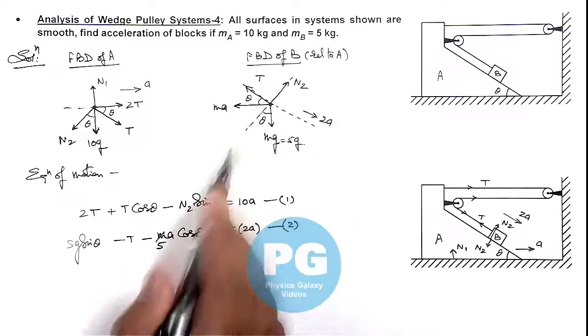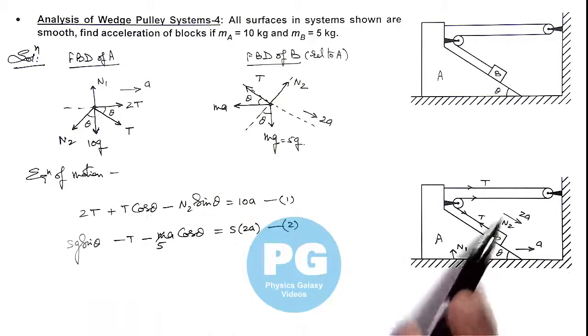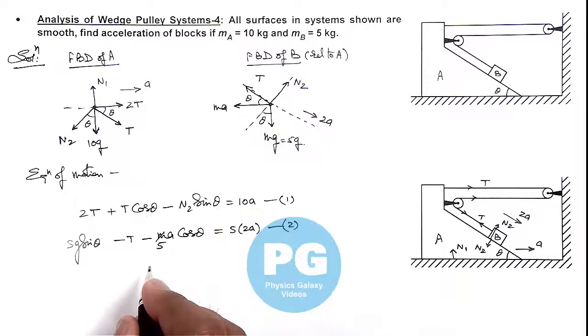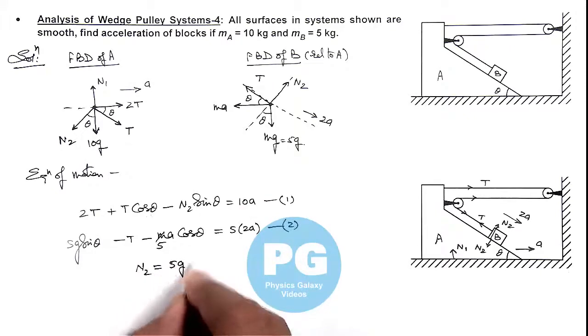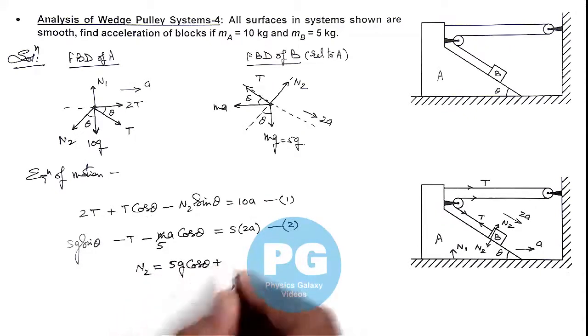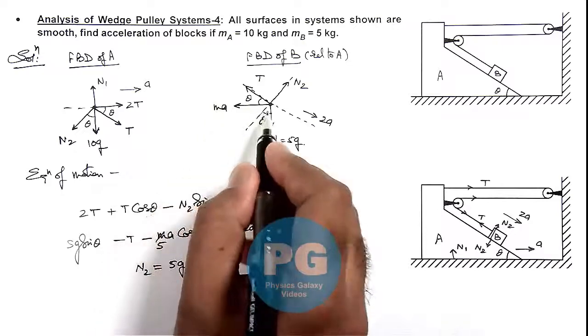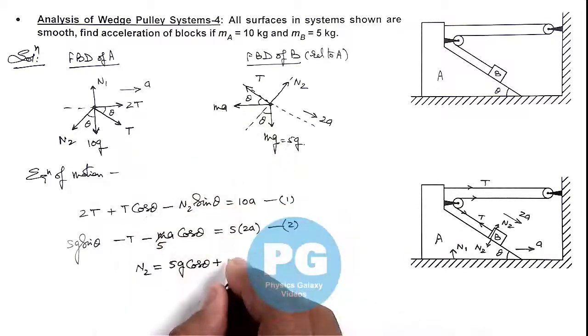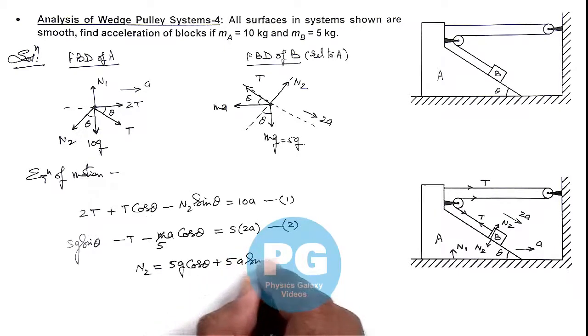And in normal direction to the inclined surface, B is not moving, so we can balance the forces. So here we can write the value of N2 is equal to 5g cos theta plus this pseudo force is 5aA as its mass is 5 kilogram, so this can be written as 5aA sin theta. This is our equation 3.